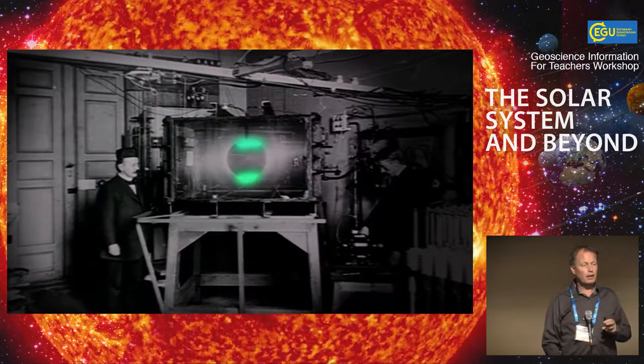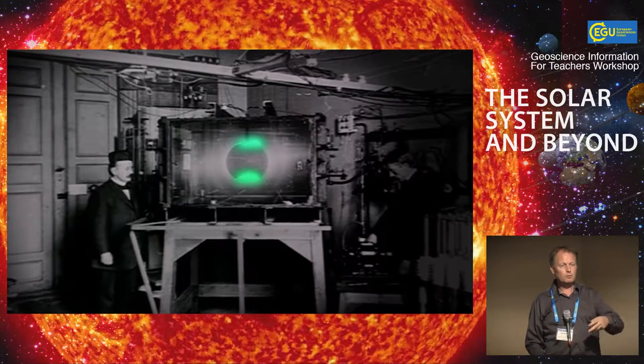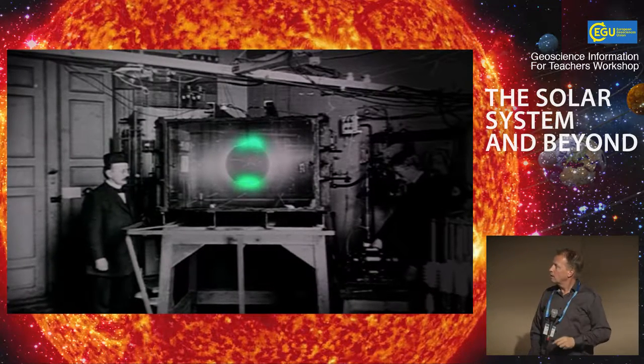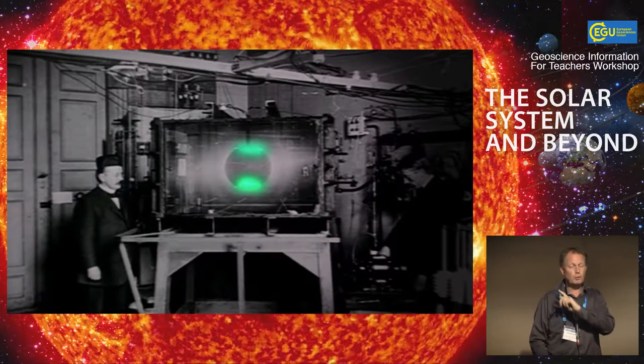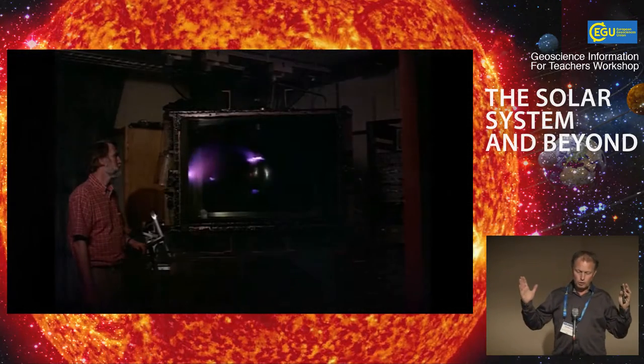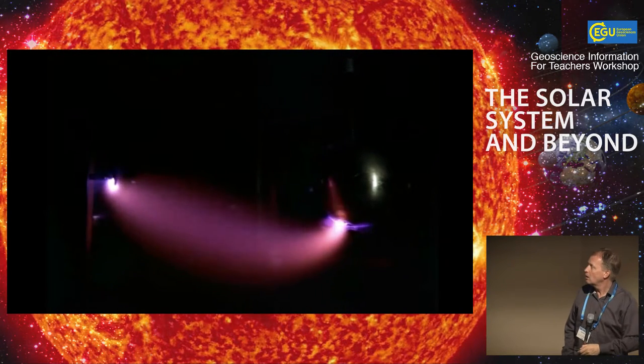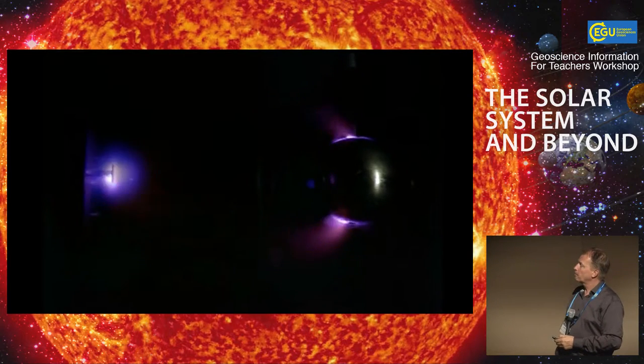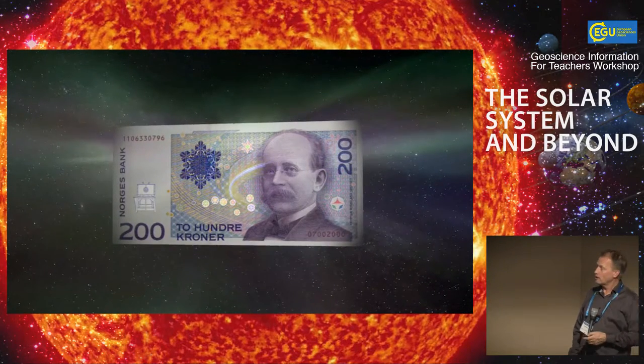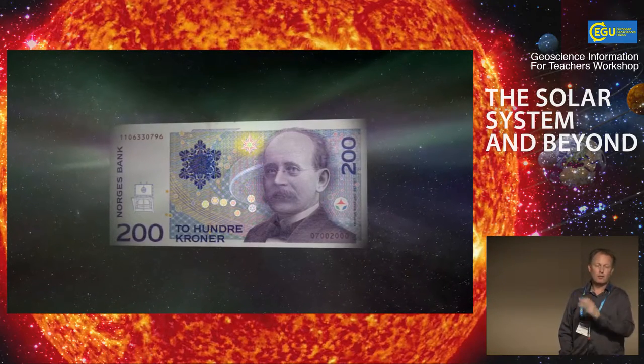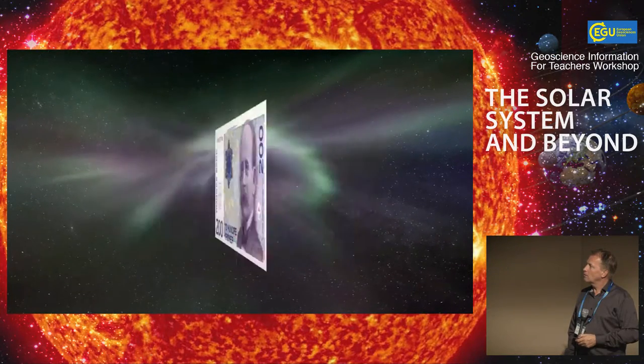One effect, of course, is the northern lights. Kristian Birkeland was the first to actually explain that the sun caused the northern lights, and he wanted to prove his own theory because nobody believed him. He made this artificial space box, a vacuum chamber with a magnet inside a metal sphere, and he bombarded it with electrons. He managed to make this artificial aurora, the northern lights. He's actually pictured on the Norwegian 200 crown bill, and there's lots of information about the northern lights there.